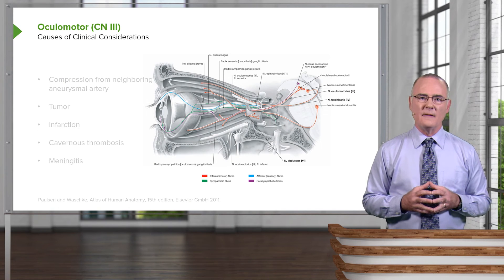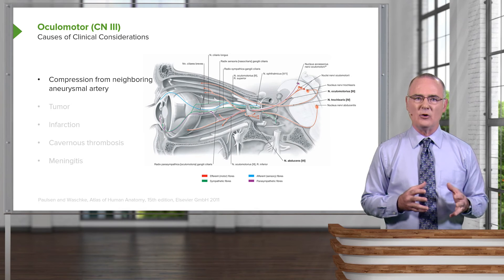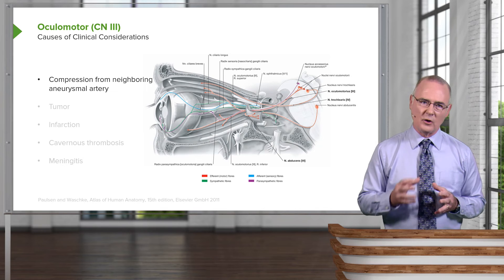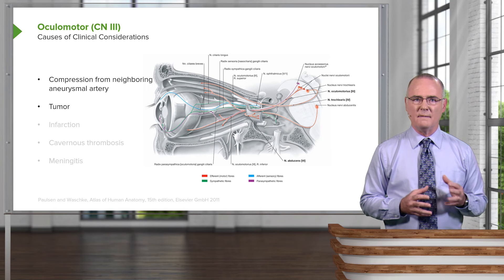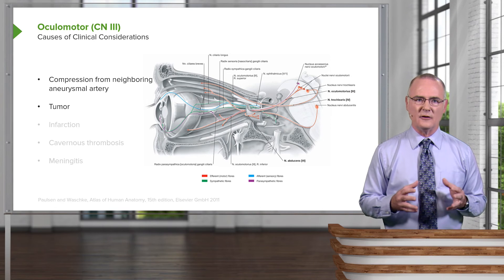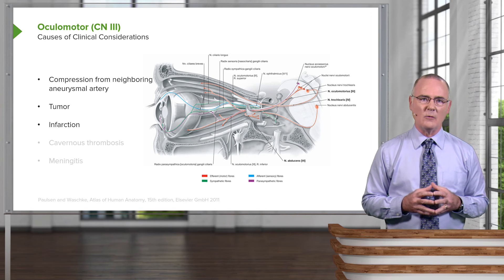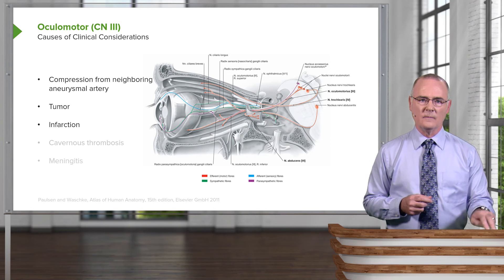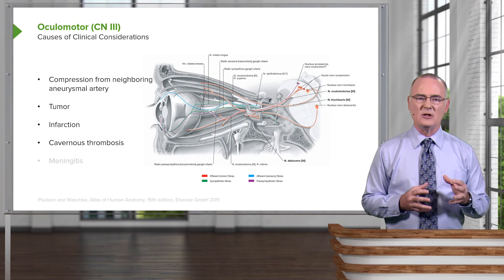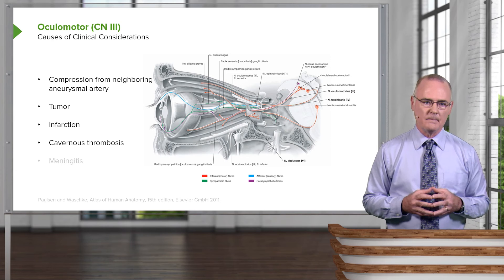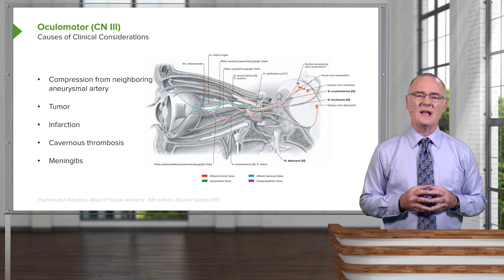Causes of these clinical features could be compression from a neighboring aneurysmal artery, which puts pressure on the nerve causing it to demyelinate. Tumors can impair the function of the oculomotor nerve causing lesioning. Lack of blood supply to the nucleus or nerve fibers can cause infarction. A thrombosis in the cavernous sinus can impinge upon the oculomotor nerve, and meningitis, an inflammatory state, can also involve the oculomotor nerve.